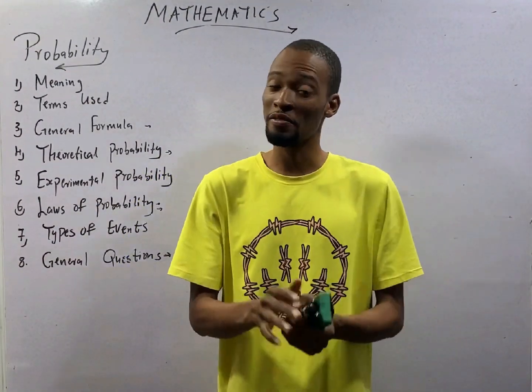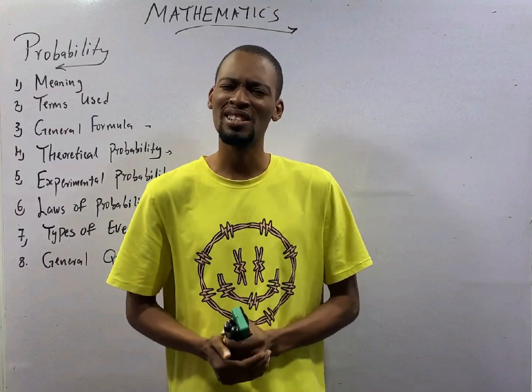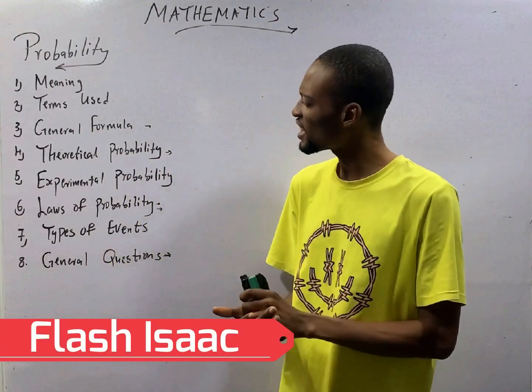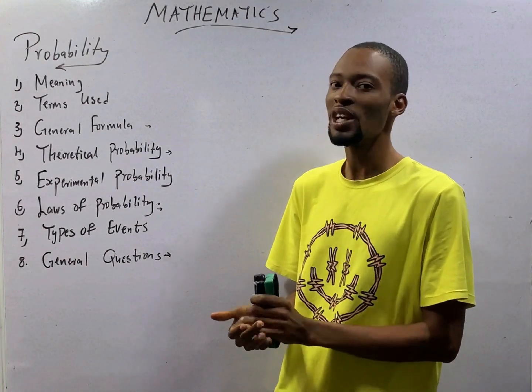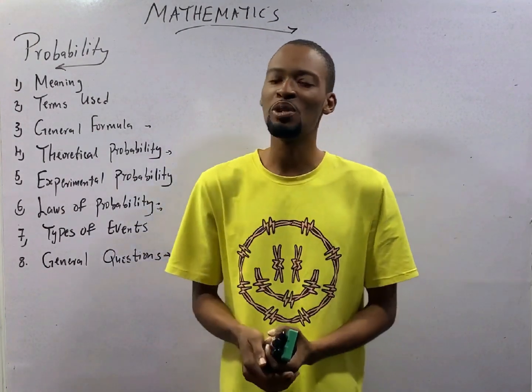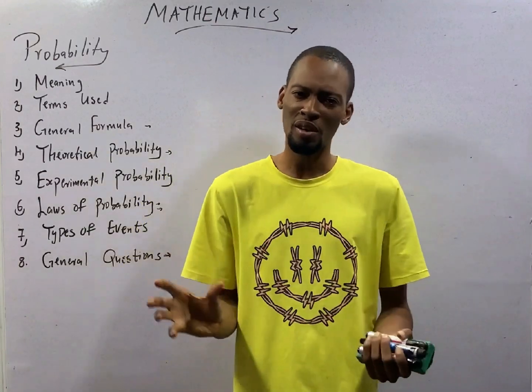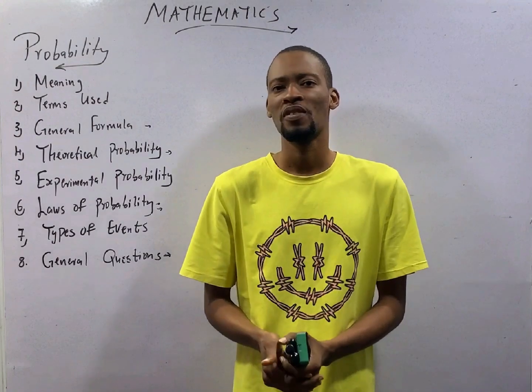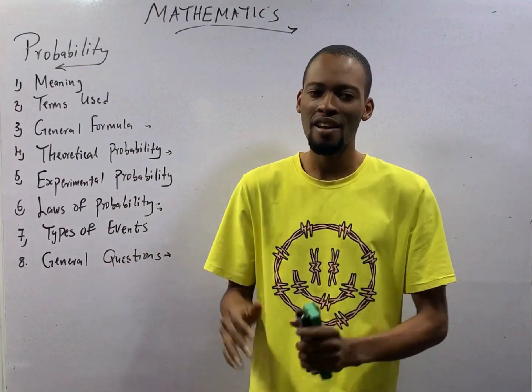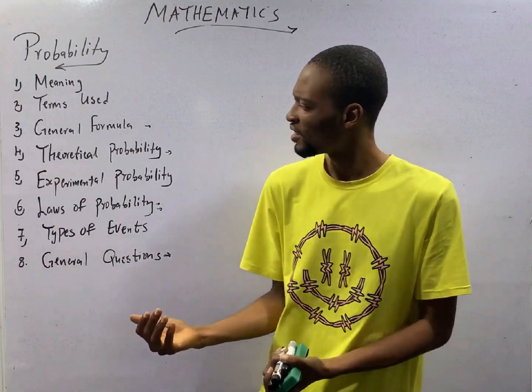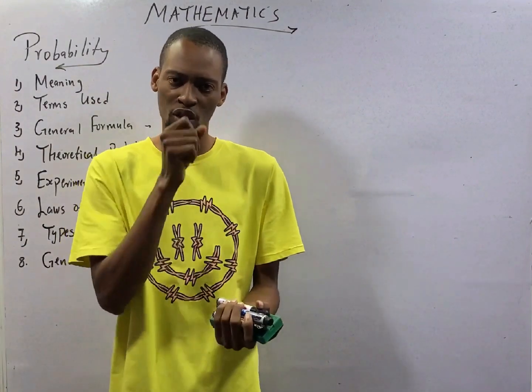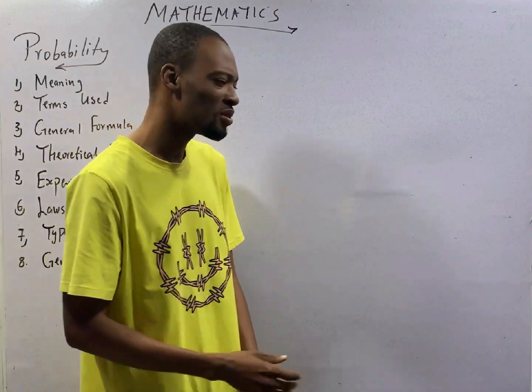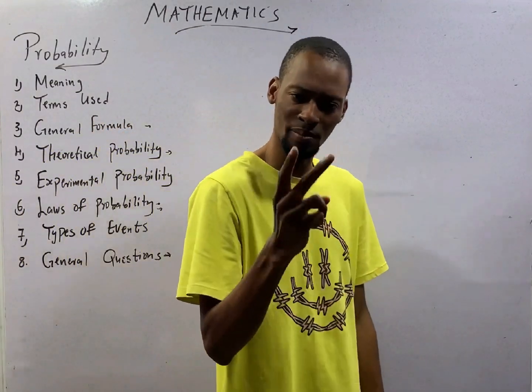This is episode number 115 of the 120 days to JAMB mathematics with Flash Isaac. We started from the bottom, now we are at the top. It has been a beautiful journey, a whole lot of episodes. And if you ask me, Mr. Flash Isaac, a teacher from the future, having traveled in time, what do you think is the best way to pass JAMB? I will tell you, follow the Flash Learners JAMB series.